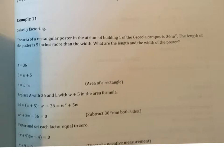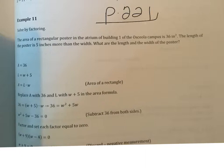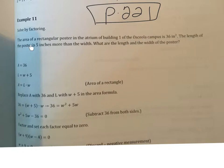We're working in section 6.1, on example 11, which is on page 221. We're solving by factoring. The area of a rectangular poster in the atrium of building one of the Osceola campus is 36 square inches. The length of the poster is five inches more than the width. What are the length and width of the poster?